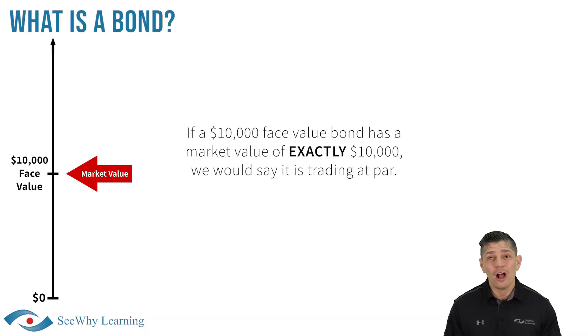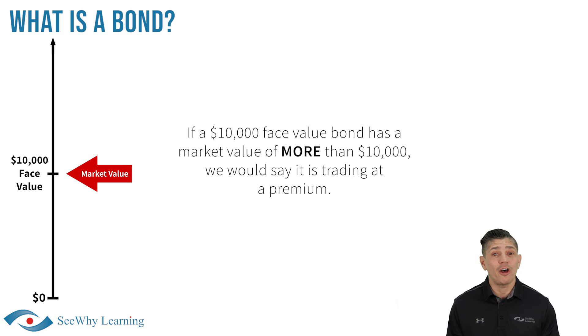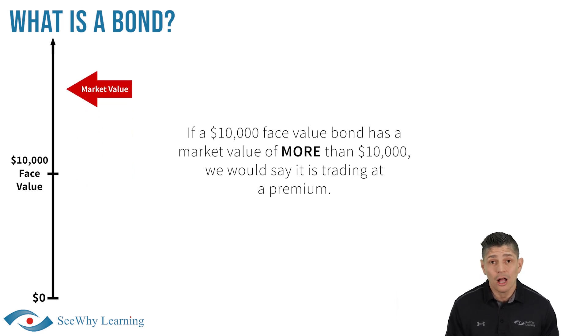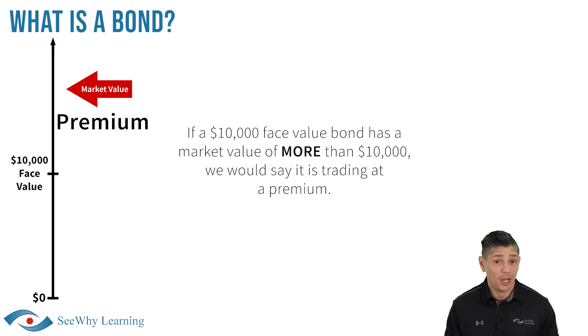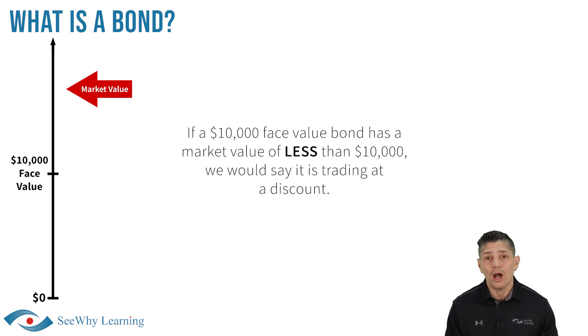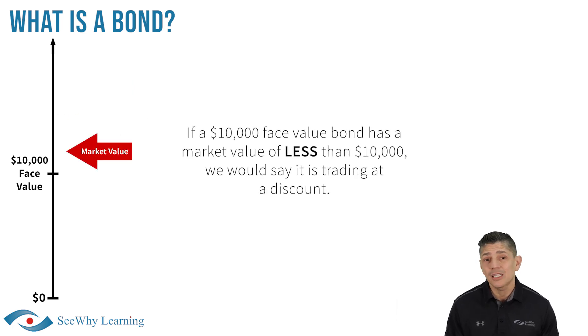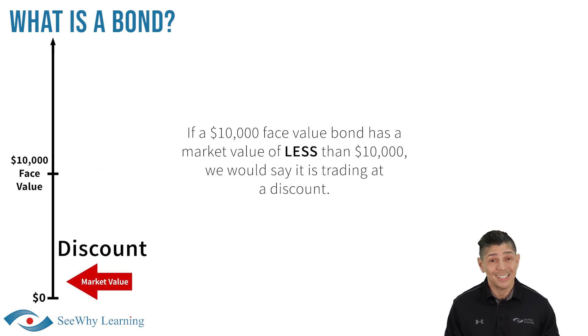Most students are already aware that equities, such as the common shares of companies, trade in the stock market. Well, much like equities, after a bond is issued, it can be traded among investors in the bond market. If a $10,000 face value bond has a market value of exactly $10,000, we would say it's trading at par. If it has a market value of more than $10,000, we would say it's trading at a premium. And if it has a market value of less than $10,000, we would say it's trading at a discount.